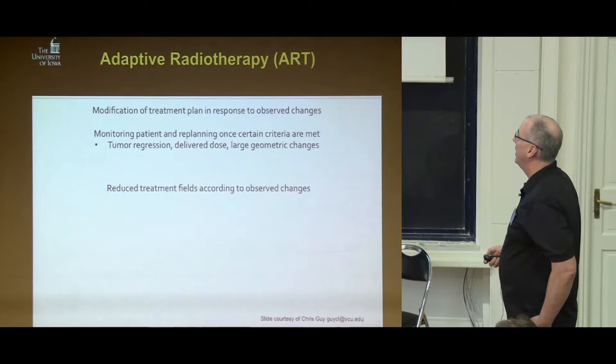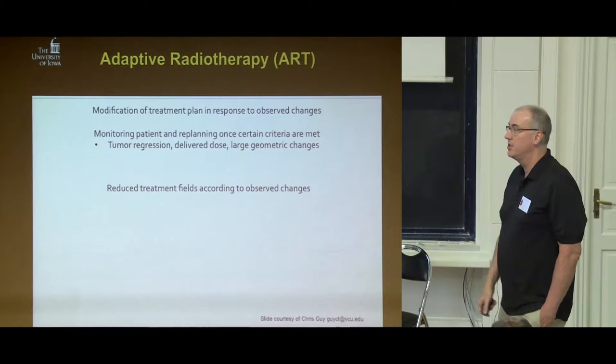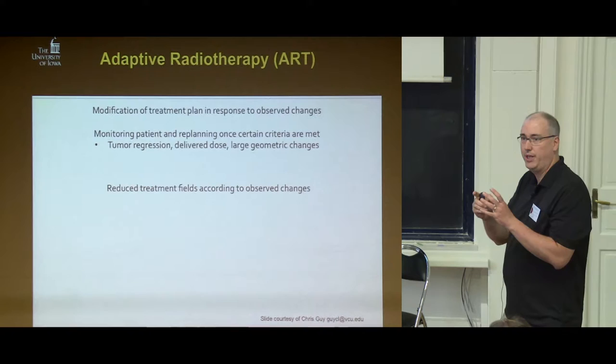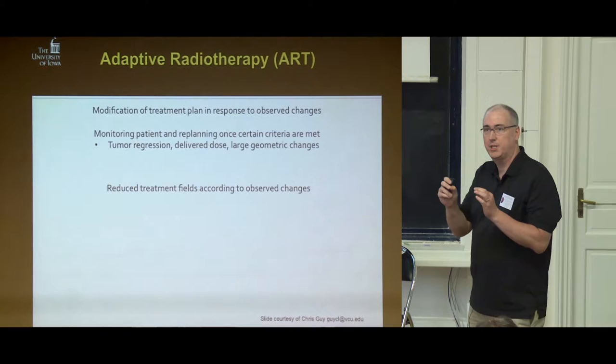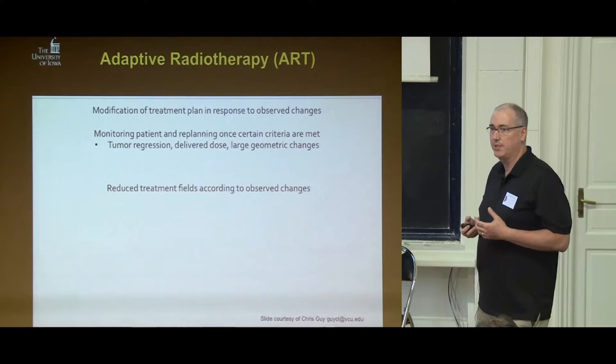On average the tumor shrinks about 44% over the six or seven week period, working out to about 0.6 to 2.4% per day. If you irradiate normal tissue, this high dose will kill whatever it hits — and we really want to keep normal lung functioning. We want to modify our treatment plan with respect to observed changes: tracking tumor regression, monitoring delivered dose, and sometimes accounting for large deformations such as a lobe of the lung collapsing due to atelectasis and then popping open.